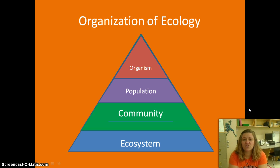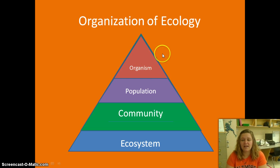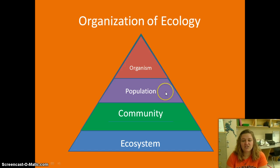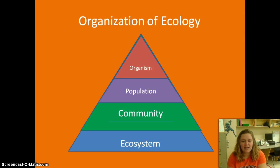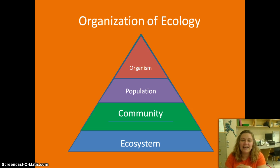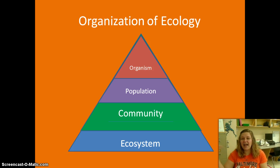We're going to start out with an organism — that's what's at the very tip top of this pyramid — and an organism is one single thing. Then we move into a population, which is lots of that one single thing. You are an organism; your class is a population. Then we jump into community, which is lots of different populations hanging out together. And an ecosystem is when we take that whole community and add in stuff that's not living to it.